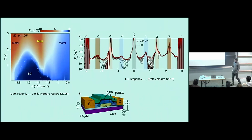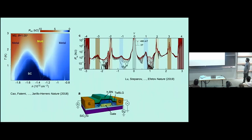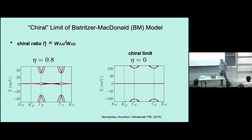At low energies in the flat bands, we have a lot of nice emergent symmetries. The charge within each valley is conserved, so on top of the global U(1) charge conservation symmetry we have a valley U(1) symmetry. One can also rotate spins within one valley, leaving the Hamiltonian invariant. So the total continuous symmetry group is U(2) × U(2). To have band insulators, we need a filling of ν = ±4, which means adding or removing four electrons per superlattice unit cell — due to valley and spin degeneracy.